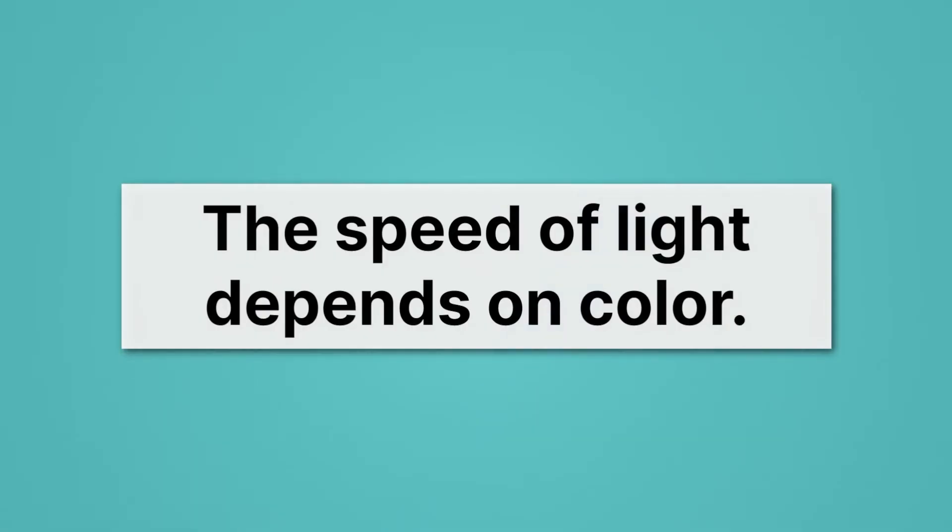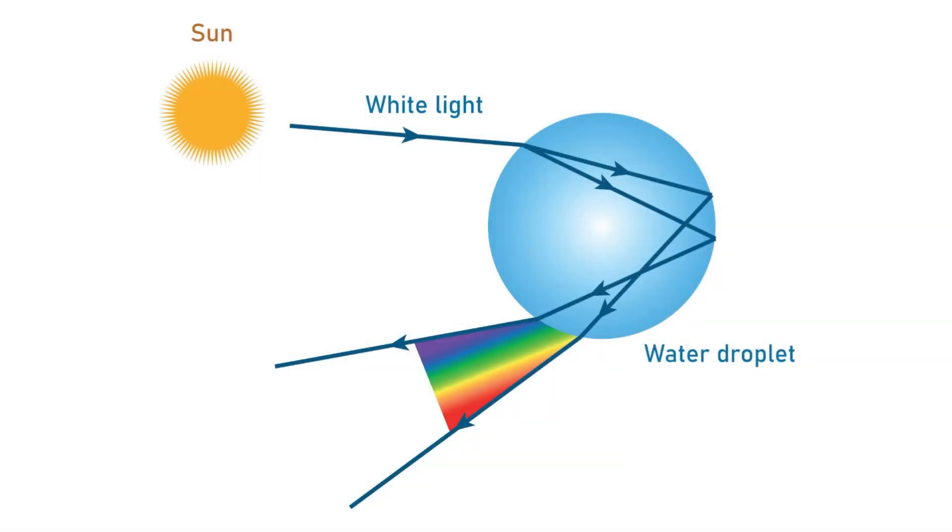It turns out also that the speed of light depends on color. So that means some colors of light in some materials travel faster than others. And that actually gives rise to something we observe all the time. Let's take a look. Here's the sunlight, emitting white light. The white light goes into a rain droplet, and it bounces around, and it's bent.